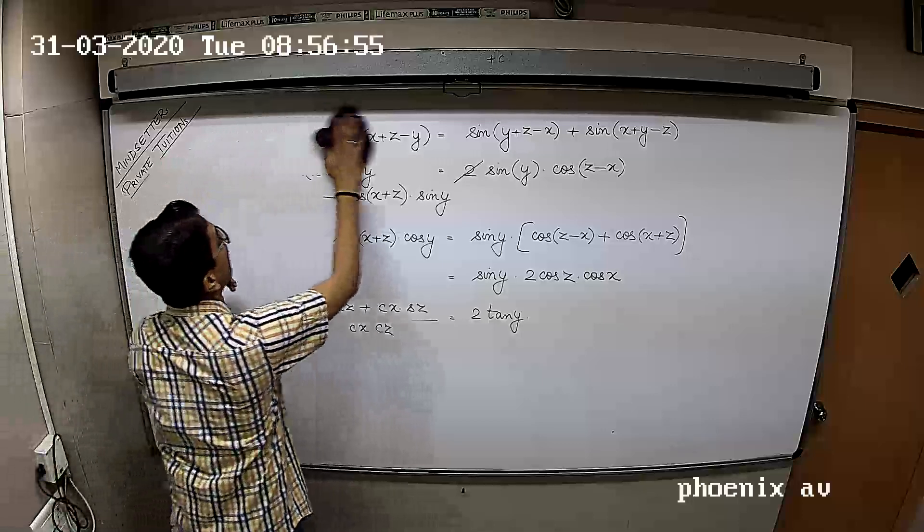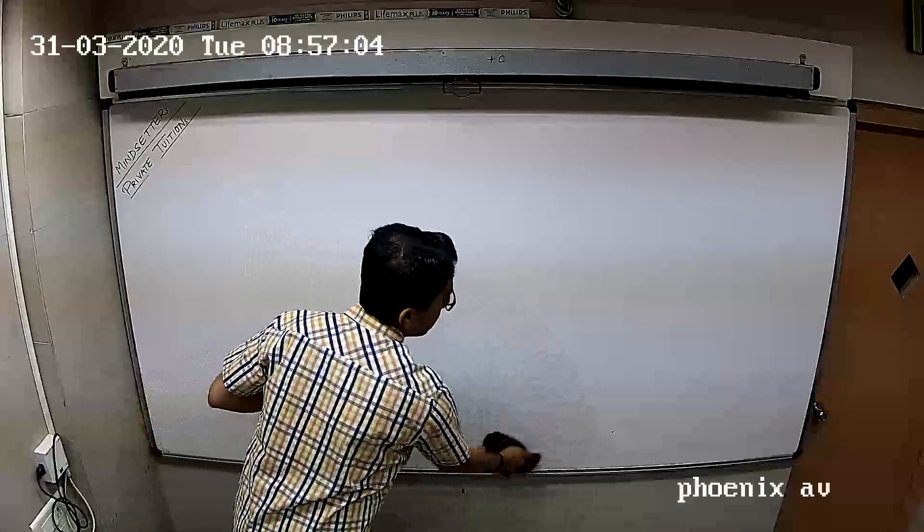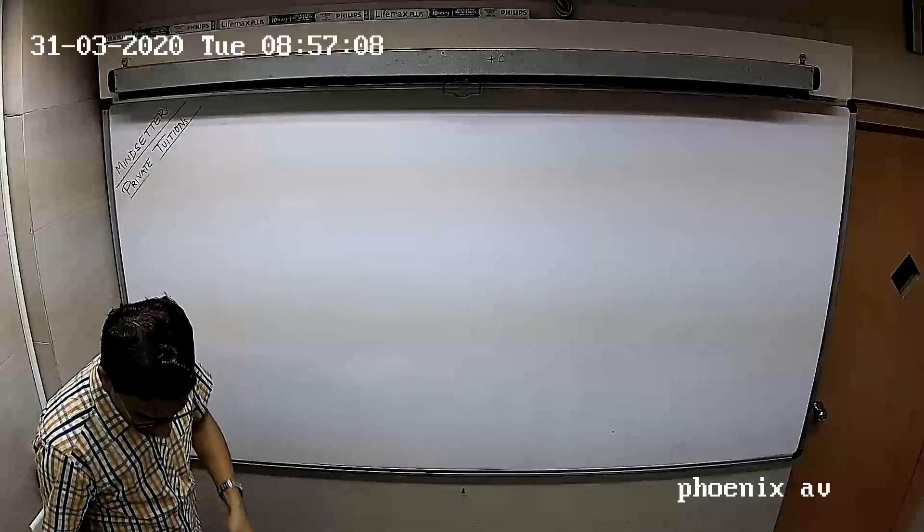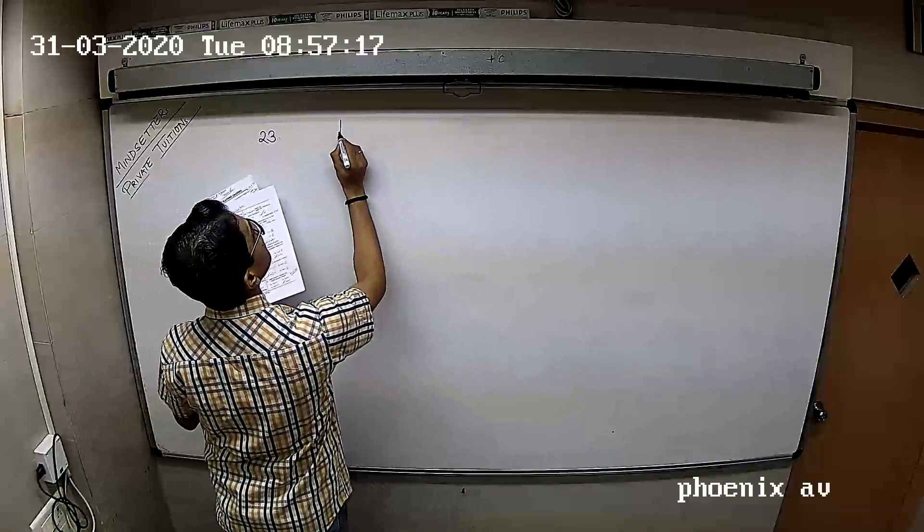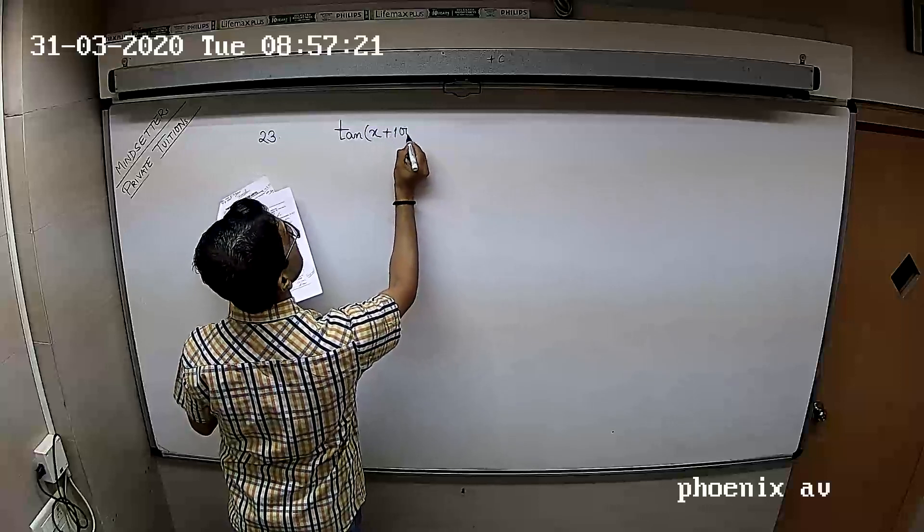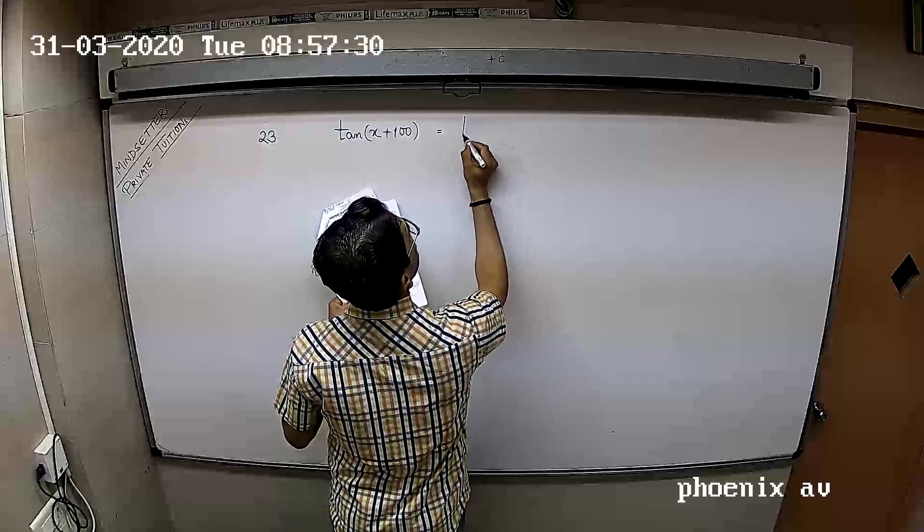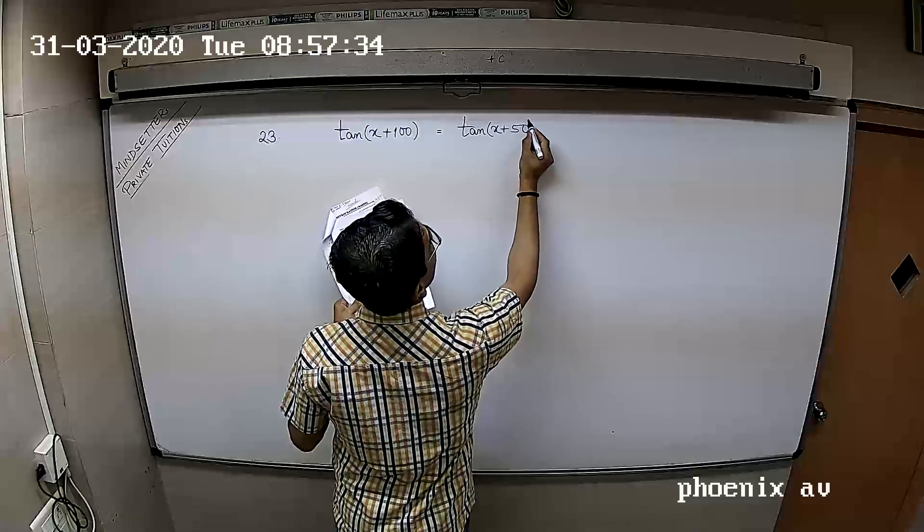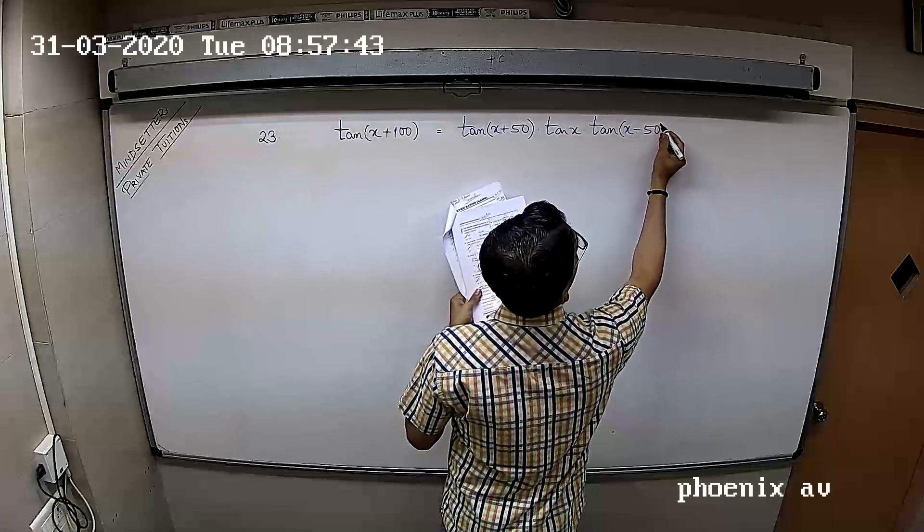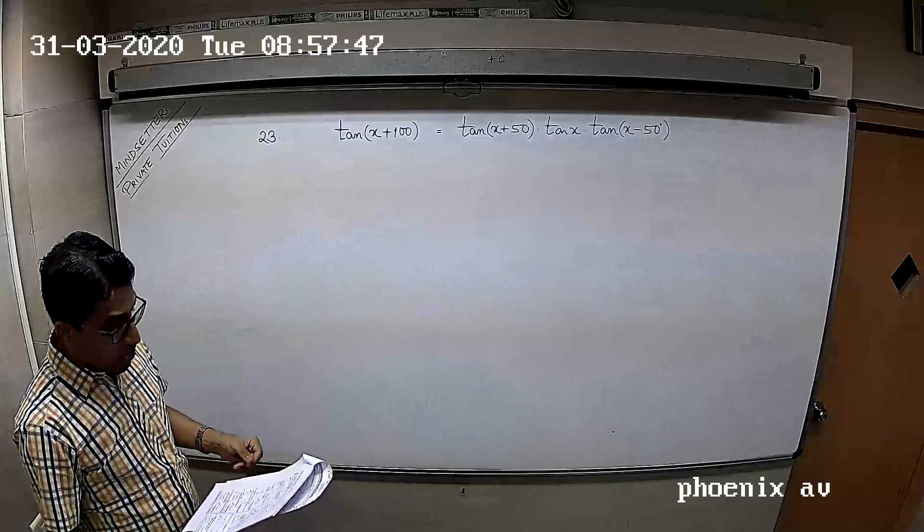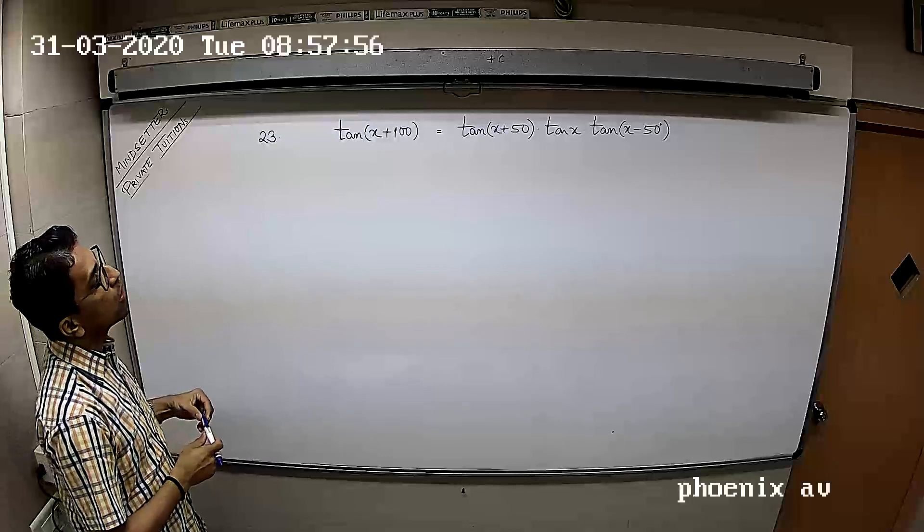Next one, question 23. The smallest positive value of X for which tan of X plus 100 degrees equals tan of X plus 50 degrees into tan of X and tan of X minus 50 degrees. Smallest positive value of X for which this is true.